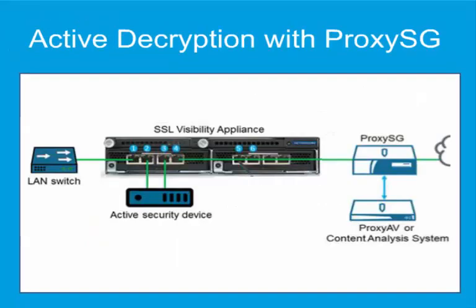In an active deployment inline with the ProxySG, the SSL Visibility Appliance is connected to the network as a bump in the wire, which means it is not an active device itself. It is unnoticed by other devices, although the security device connected to it is active. The SSLV appliance decrypts the SSL traffic and sends it to the security device, along with all other traffic. The decryption policy is enforced according to the ProxySG configuration.